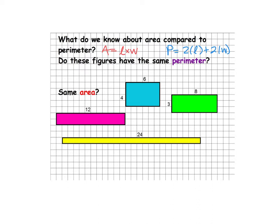So if I go through these shapes and find all of the areas and all the perimeters, let's see if they're all the same or different. For the first shape, the blue one, area is 6 times 4, which gives us 24. The perimeter: 6 times 2 and 4 times 2 gives us 12 and 8, so 12 plus 8 is a perimeter of 20. Now for the green shape, 8 times 3 gives an area of 24 again. But the perimeter: 8 times 2 is 16, 3 times 2 is 6, giving a perimeter of 22.